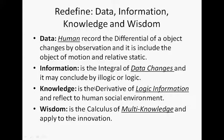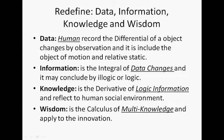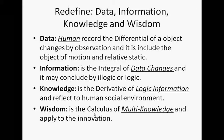There are two kinds of basic attributes in the world: motion and relative static. Human records data, which actually records the differential of the object-exchange spatial opposition. So the data definition is about the relationship between observer and object. For information, it is a kind of data integration — it can be illogical or logical. Illogical will become noise; logical will become sense. Knowledge is activated information, present as logical information implemented in the human social environment. Wisdom is closer to the innovation concept. When new ideas come, it must collect different levels of information and knowledge to rebuild a new concept.